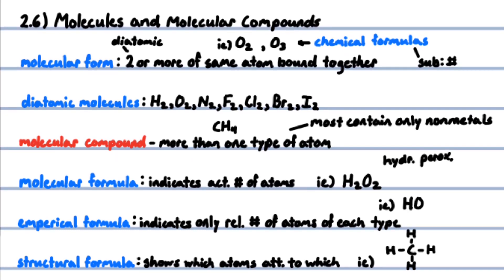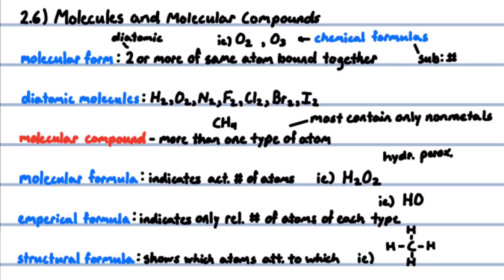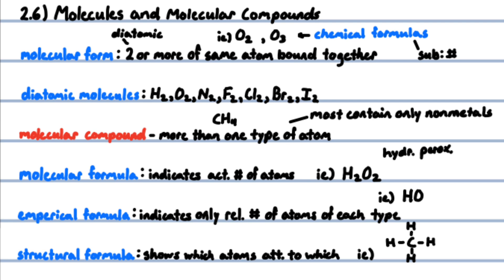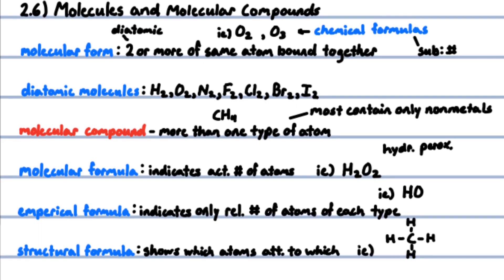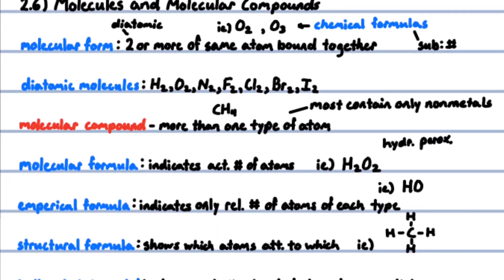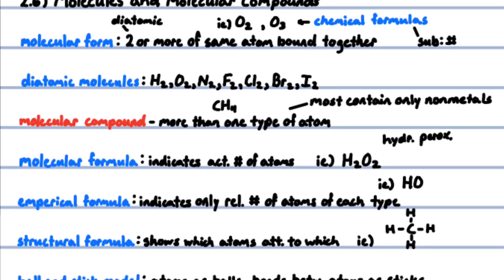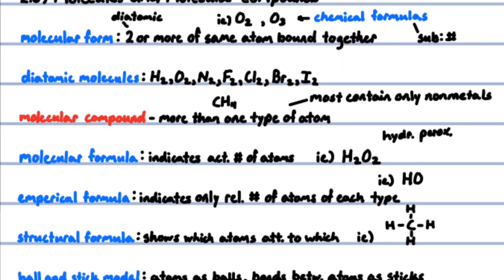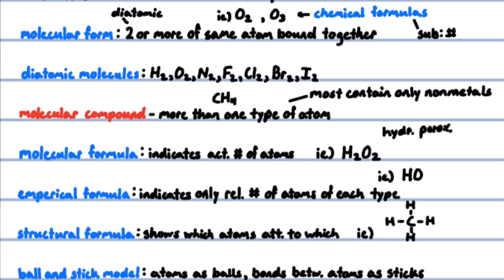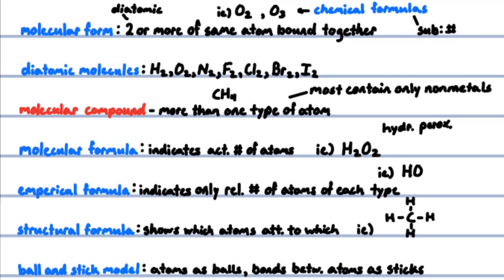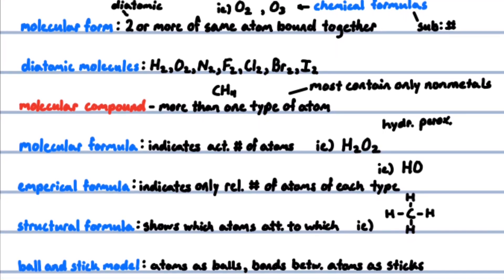In molecular form, two or more of the same type of atom are bound together. For example, oxygen in air consists of molecules that contain two oxygen atoms. O2 is the chemical formula that represents the oxygen molecule. A molecule made up of two atoms is called a diatomic molecule. Normally, hydrogen, oxygen, nitrogen, and the halogens occur as diatomic molecules. Molecular compounds contain more than one type of atom, like methane, CH4.